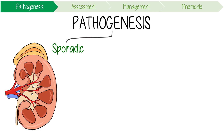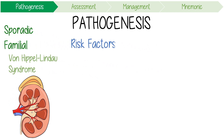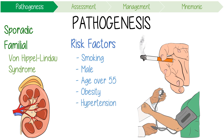Its pathogenesis is mainly sporadic, but there are very rare familial forms such as von Hippel-Lindau syndrome. Key risk factors include smoking, male sex, age over 55, obesity, hypertension, and those hereditary familial syndromes.